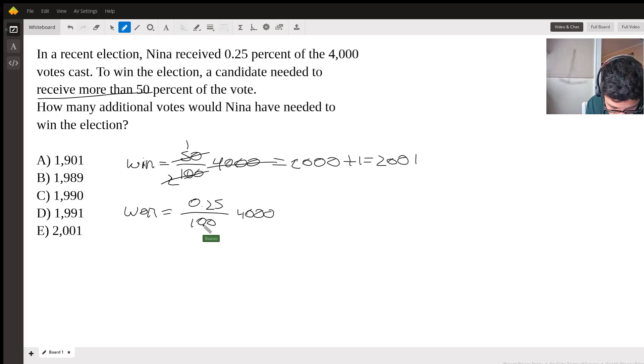Okay, so here we can simplify two zeros. And we're left with 0.25, which can be converted into a fraction as 1⁄4, times 40. So 40 is 4 times 10. So we can simplify the four, and we're left with just 10.